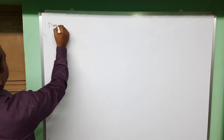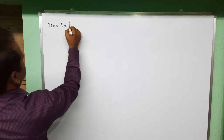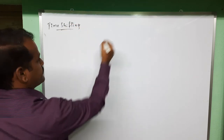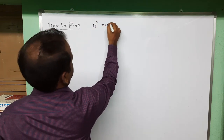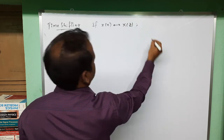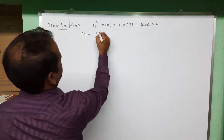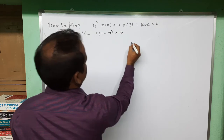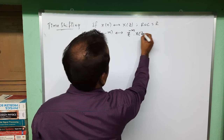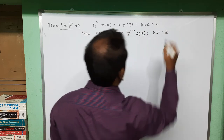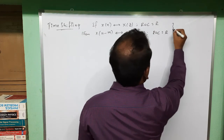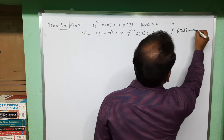Good morning students. In this video we are going to see the time-shifting property of the Z-transform. The statement is: if x(n) has Z-transform X(z) with ROC R, then x(n-m) has Z-transform z^(-m) X(z) with the same ROC. This is the statement of the time-shifting property of the Z-transform that we are going to prove.